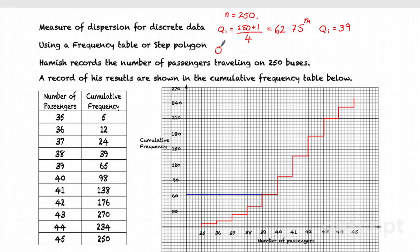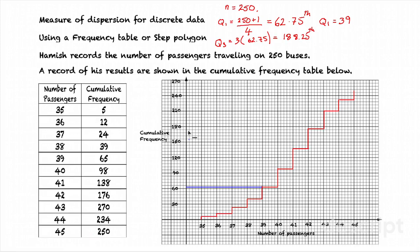I'm now going to find Q3. That's going to be 3 times my quarter, because I need 3 quarters of the way along. That value is 188.25. And again, remember, that's not my Q3. That's where I will find Q3. Drawing a horizontal line across at 188. It will be around here. I see that I reach the graph at 43.